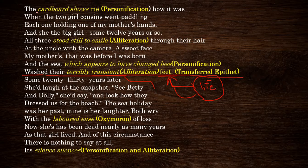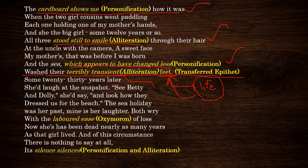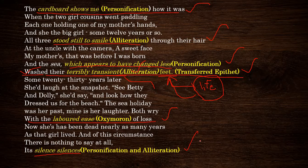To summarize: 'The cardboard shows me how it was' is a personification. 'Stood still to smile' is an alliteration. 'Which appears to have changed less' is a personification. 'Terribly transient' alone is an alliteration, and the entire sentence is a transferred epithet. 'With labored ease of loss' is an oxymoron. And 'silence silences' is both a personification and an alliteration. These are the things you should keep in mind for poetic devices.